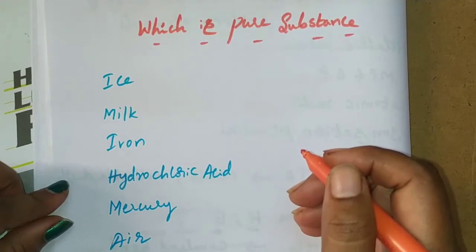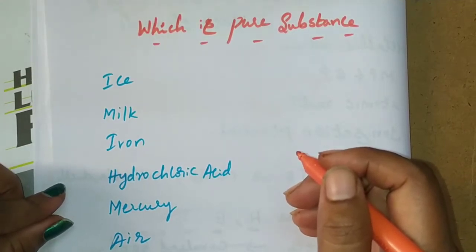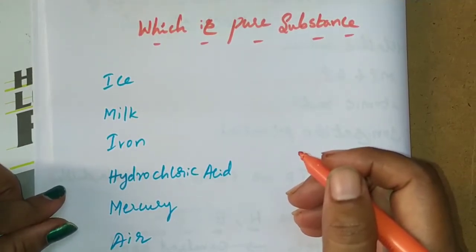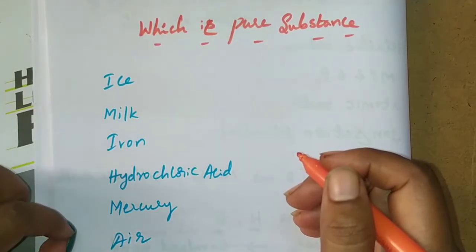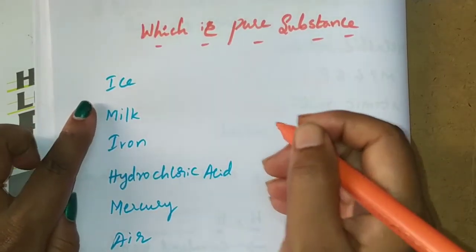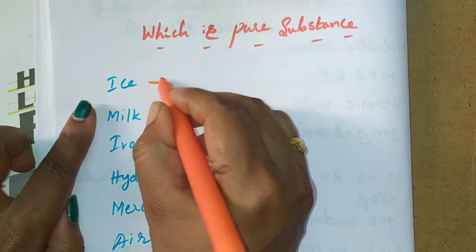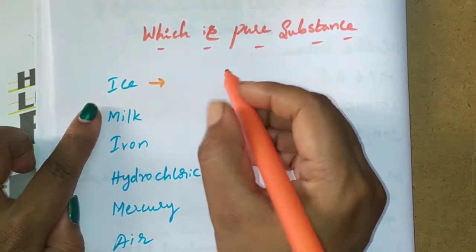Hi everyone, welcome to my channel. Today our topic is which is pure substance and which is not a pure substance. So see here some examples. Ice - it is solidified water, water turns to a solid state.